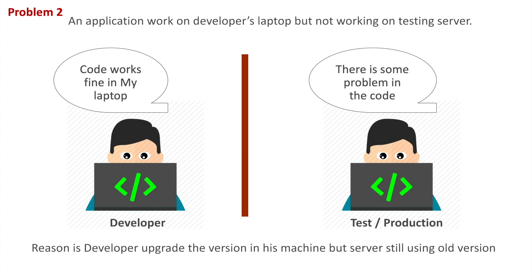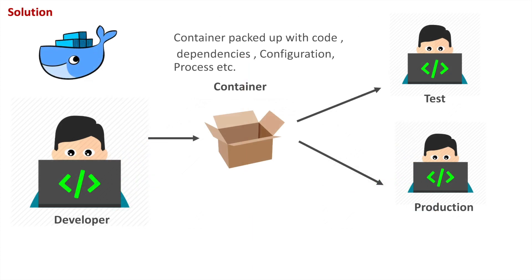Let's look at a real-time example. Suppose you are developing an application and running it on a Windows server, but when the deployment team deploys that application on a Linux server, the problem is that the configuration of the Windows server and the Linux server are different, so the application will not work.